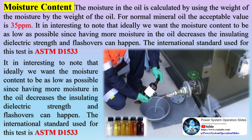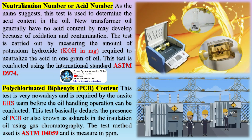Neutralization number or acid number: this test is used to determine the acid content in the oil. New transformer oil generally has no acid content but may develop acidity due to oxidation and contamination. The test is carried out by measuring the amount of potassium hydroxide (KOH) in mg required to neutralize the acid in one gram of oil. This test is conducted using international standard ASTM D974.